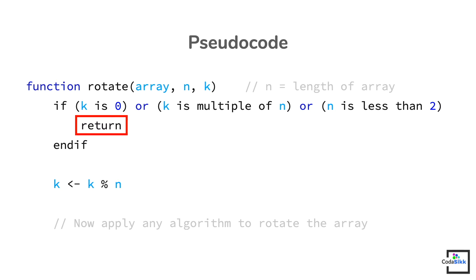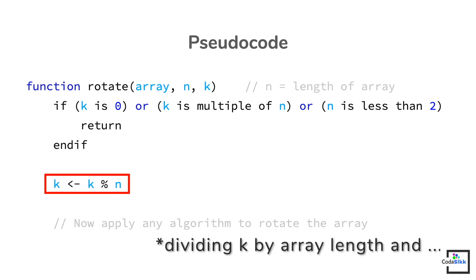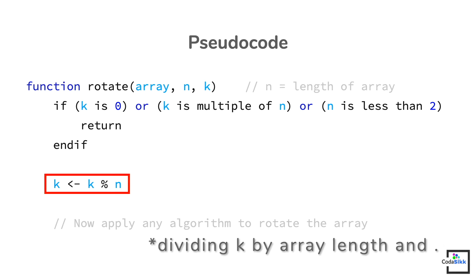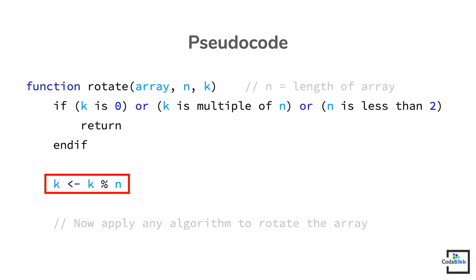If the value of k is greater than the length of the array, you can optimize your code by dividing k by the array length and saving the remainder back into k. If you are following my solution, make sure you have these lines of code in your implementation, as I haven't tested my solution without them. Once again, if you want to check the C, Java, or Python implementations, follow the links in the description.